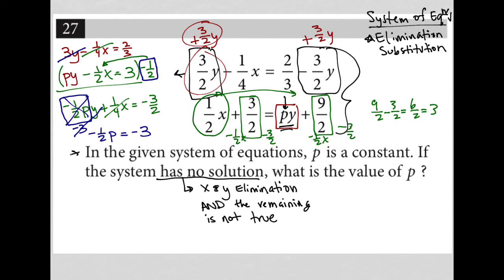Hopefully that makes sense. I need P to be a value that causes negative one half P to equal negative three in order for both X and Y to eliminate. And that is what we'll always see as the case when a system of equations has no solution. So all I have to do is solve this equation. I can multiply by negative two, leaves me with positive P equals positive six. Therefore the answer is six.